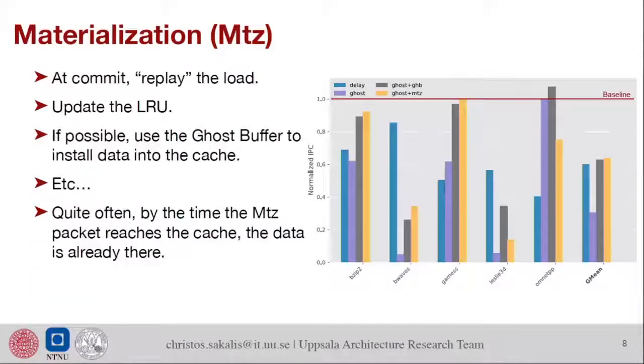The next idea is something we call materialization. Essentially, the idea is you do your ghost access which is invisible to the system, and then when you know it's safe, why not just do the side effects then? When it's safe you can update the cache, update the LRU, maybe use the ghost buffer that we mentioned before. If there's data there, why not bring them in the cache, and so on.